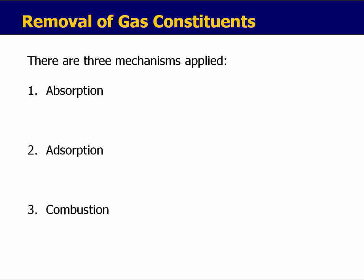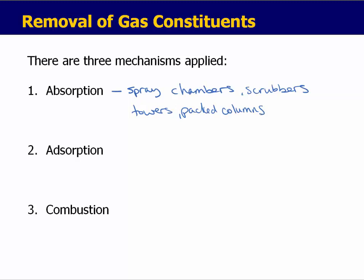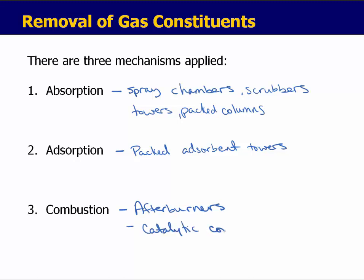The first is absorption, the second is adsorption, and the third is combustion. We'll discuss absorption with the use of spray chambers and scrubbers, and then towers or packed columns. Adsorption will be covered for packed adsorbent towers. The third mechanism, combustion, is commonly used to combust methane, carbon monoxide, or hydrocarbons — we'll discuss afterburners and catalytic converters, which are used on automobiles.